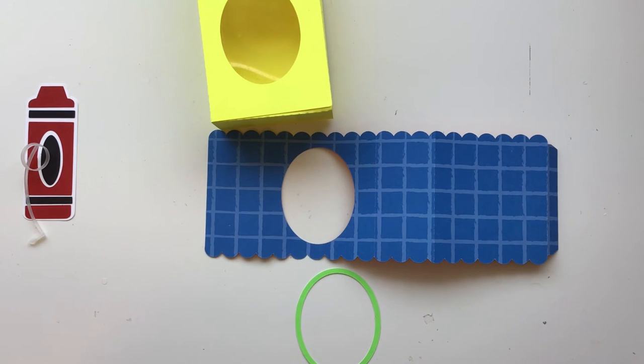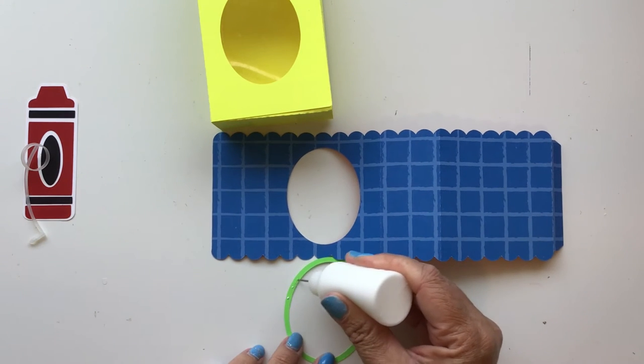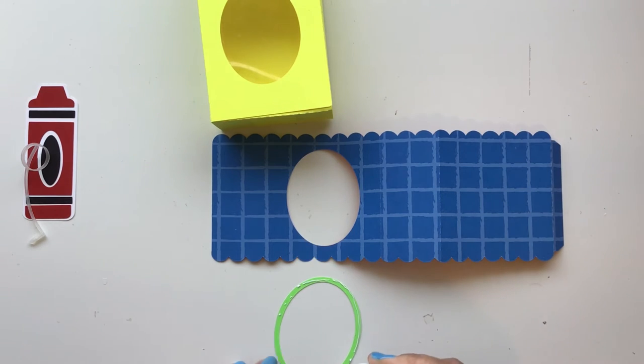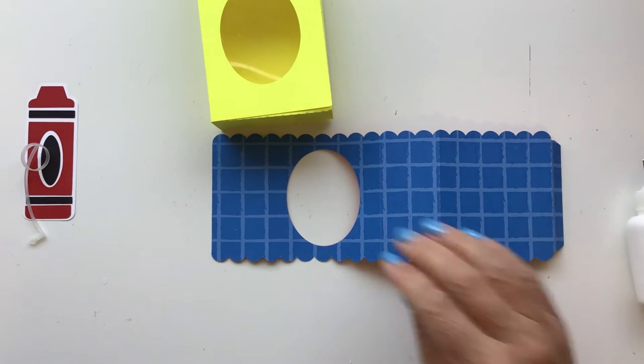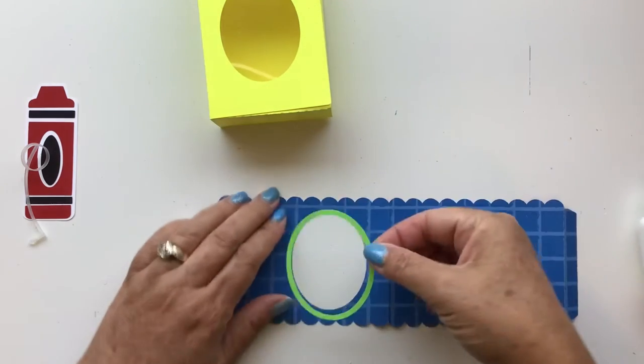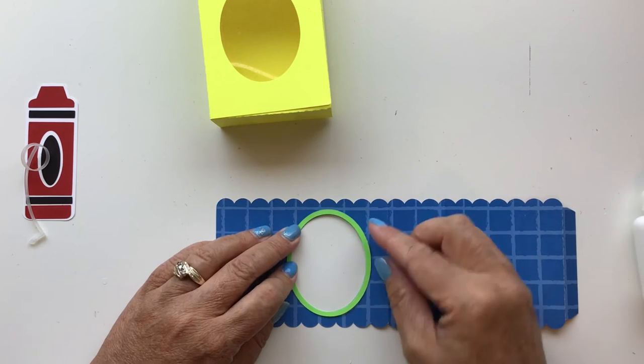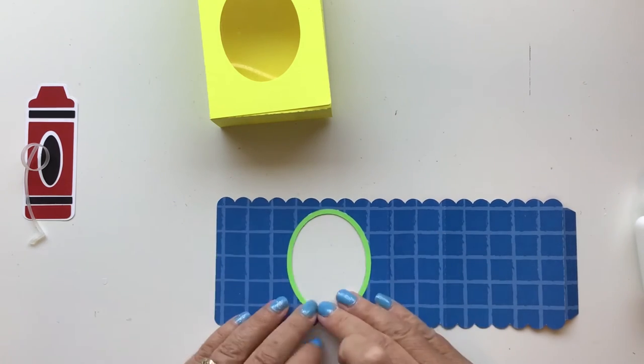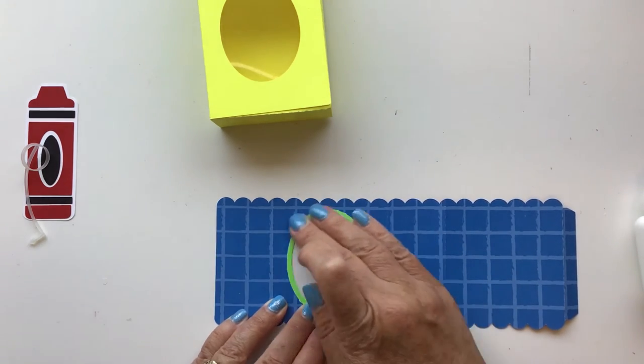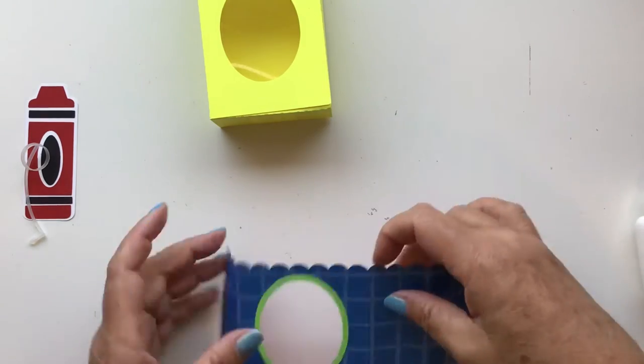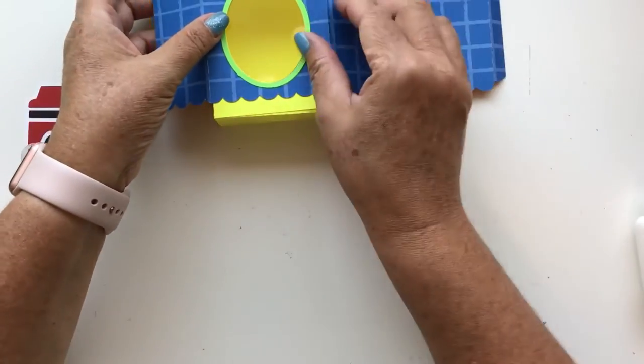Some glue here. And I want it down pretty firm because when I start bending this, I don't want that frame to pop up. I'm going to go ahead and just lay that on there.